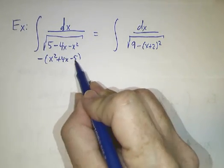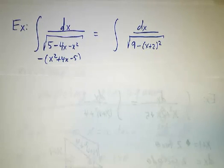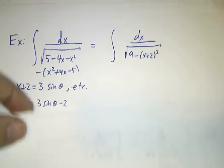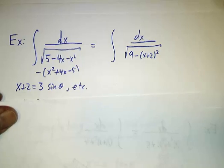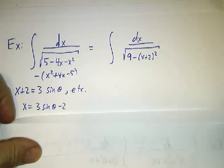So if you rewrite things in terms of x plus 2 squared, you get x plus 2 squared minus 9. Or what's originally in there is 9 minus x plus 2 squared. So you let x plus 2 be 3 sin theta. So x is 3 sin theta minus 2. And you're off to the races.